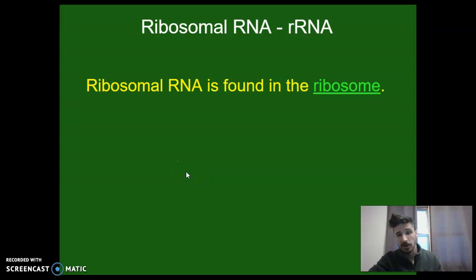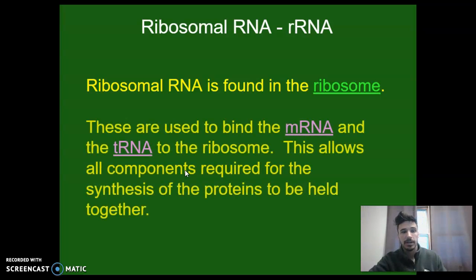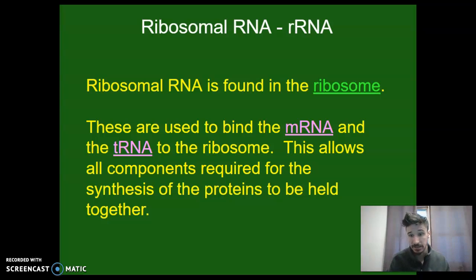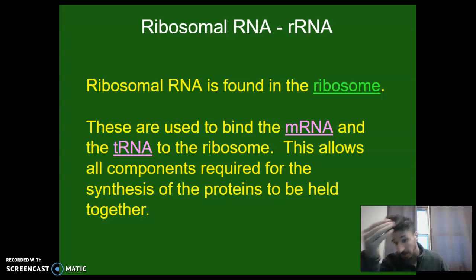There's also ribosomal RNA. It's found in the ribosome and is used to bind mRNA and tRNA to the ribosome. When mRNA gets there, ribosomal RNA holds it in place; when the tRNAs arrive, ribosomal RNA holds them in place too. This is really what allows protein synthesis to occur so consistently — the holding together of these different types of RNA at the ribosome.